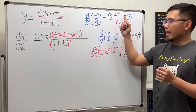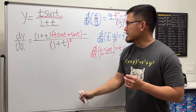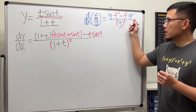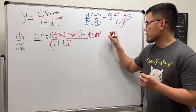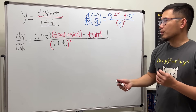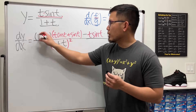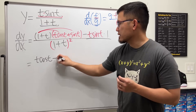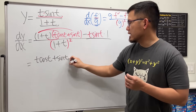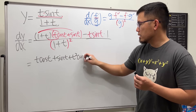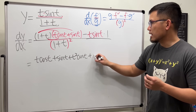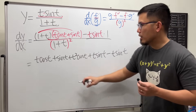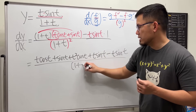So that gives us t cosine t plus sine t for the derivative of the top. Now putting it all together: we have 1 plus t times that derivative — giving us t cosine t plus sine t plus t squared cosine t plus t sine t — and then we subtract the top function t times sine t, multiplied by the derivative of the bottom, which is 1, all over 1 plus t squared.